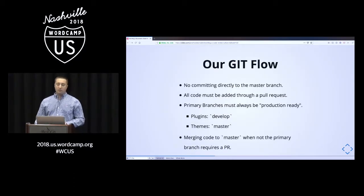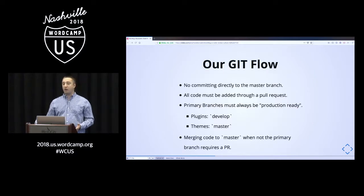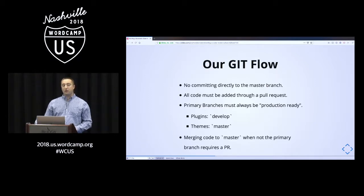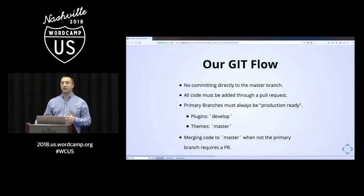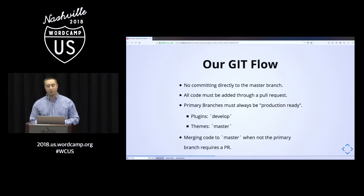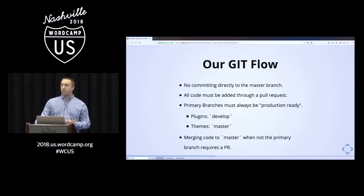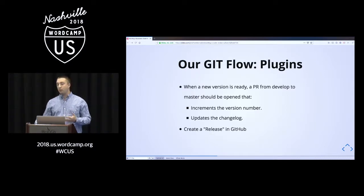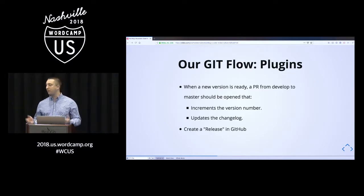We had a few adjustments to GitHub flow. For plugins, we had 'develop' as our primary branch and for themes it was 'master'. All code must go through a pull request — no committing directly to master. You can lock this down in GitHub so only administrators can force push to master. If a designer accidentally committed to master, they wouldn't be able to push; they'd have to recommit to a branch and open a PR. For plugins, when develop was ready we would open a PR to master, do a final code review, version it, use that PR to increment the version number and update the changelog, then create a release in GitHub.